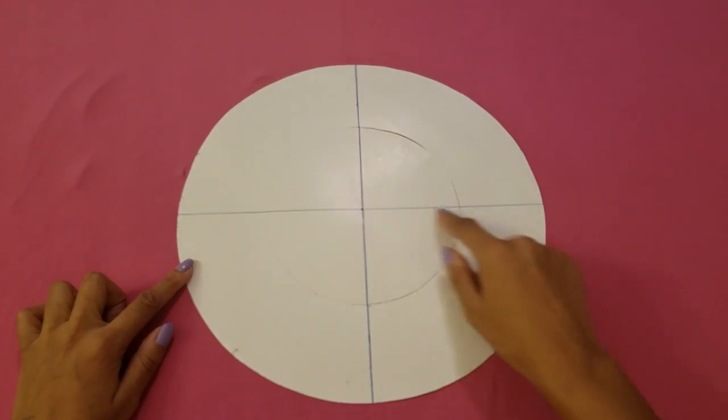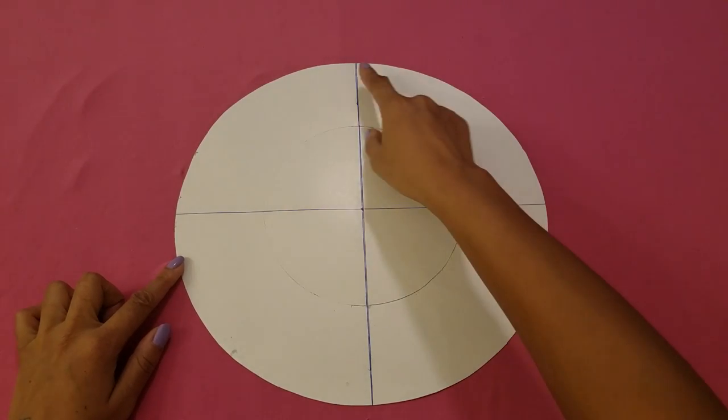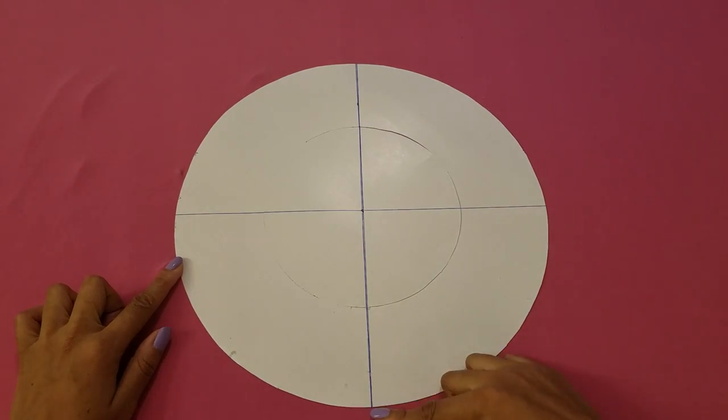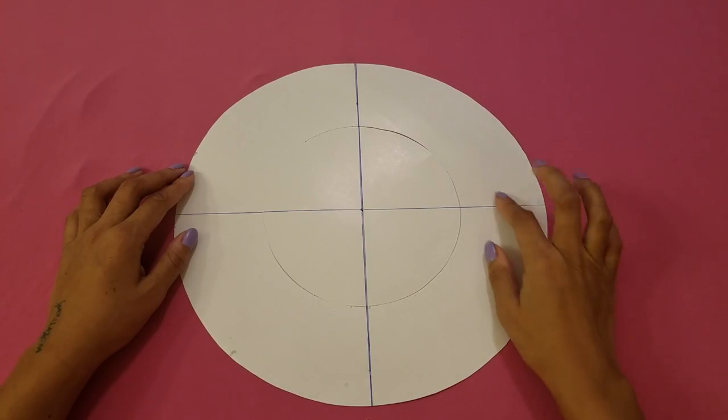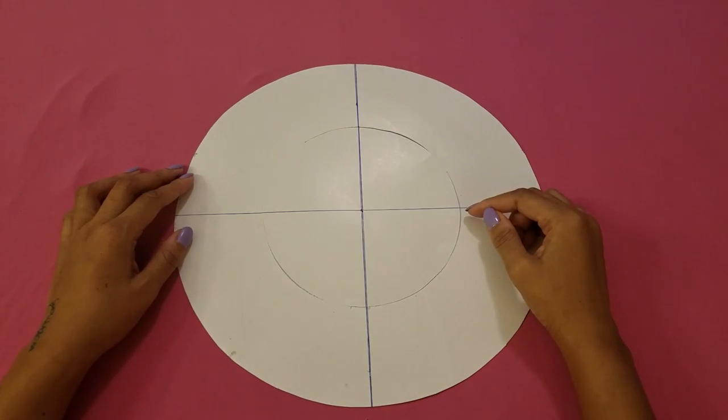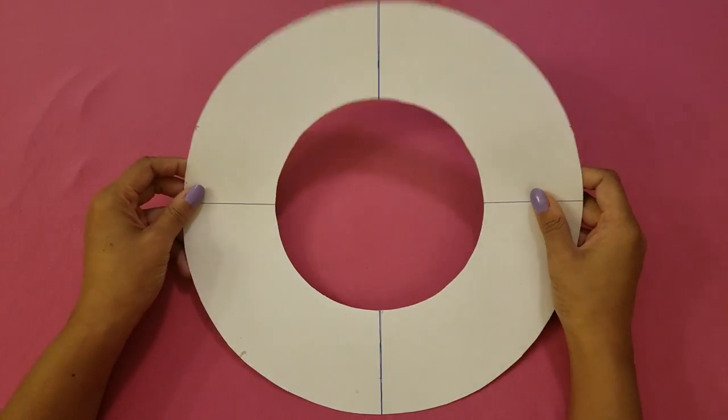Then I drew a line directly across the diameter and another line 90 degrees directly across that diameter. Then I cut an inner circle with a radius of 3.5 inches, and this is your pattern.